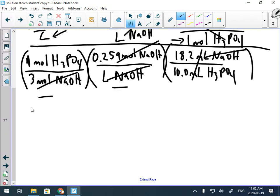So you can see it goes mole ratio, concentration, volumes—super simple pattern to remember. 0.259 times 18.2 and then divided by 10 times 3. I get three sig figs: 0.157 moles per liter. All right, pretty good.